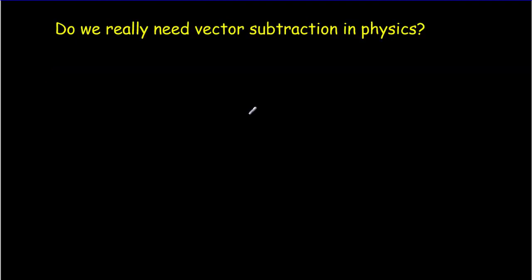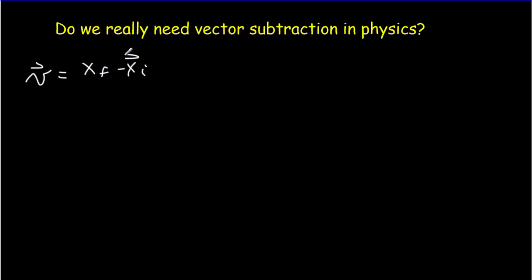Is vector subtraction really going to be important in physics? Let me write down three of the most fundamental equations in all of physics. The first is the definition of velocity — it's the rate of change of displacement. That is, it's the final position minus the initial position: subtracting vectors divided by the time elapsed.